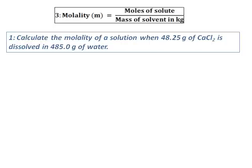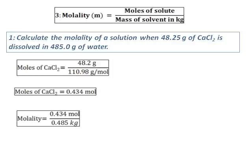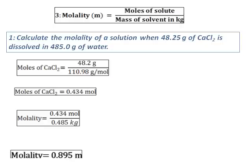I just need to calculate the moles of calcium chloride. The mass of calcium chloride is given. Calculate the molar mass of calcium chloride and I get the moles of calcium chloride. Once I get the moles, divide it by the mass of solvent — but the mass of solvent should be in kilograms. Convert 485 grams into 0.485 kilograms, and I get the molality as 0.895 m.